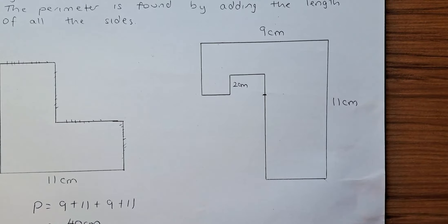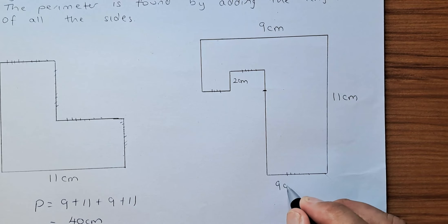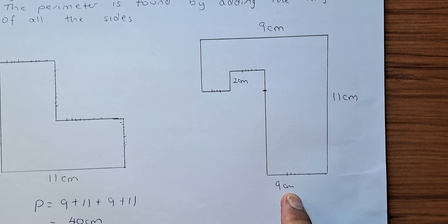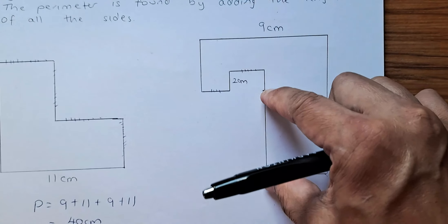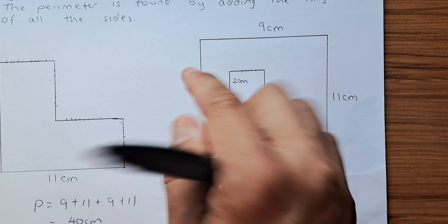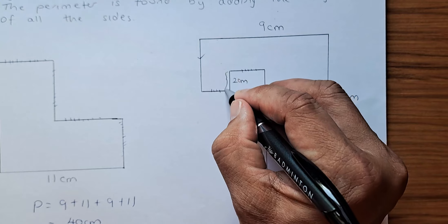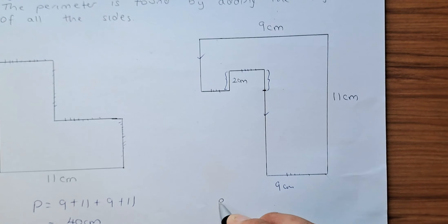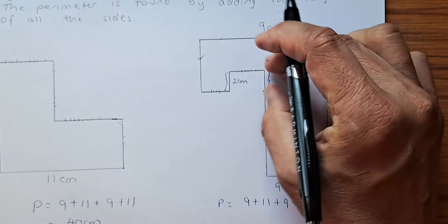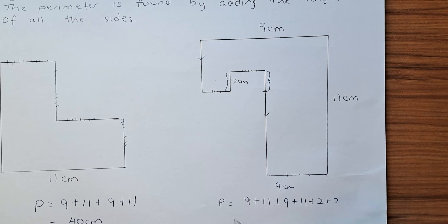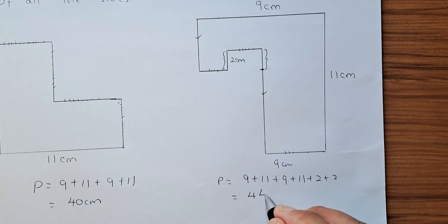This next one is a little bit harder, but uses the same idea. This side is 11 and this side is nine. If you add this part, this part, and this part together, they add up to another nine. Slightly differently here, this part plus this part is going to be 11 — so you have an additional 2 cm and 2 cm. The perimeter is nine plus 11 plus nine plus 11, plus two plus two, giving 44 centimetres.